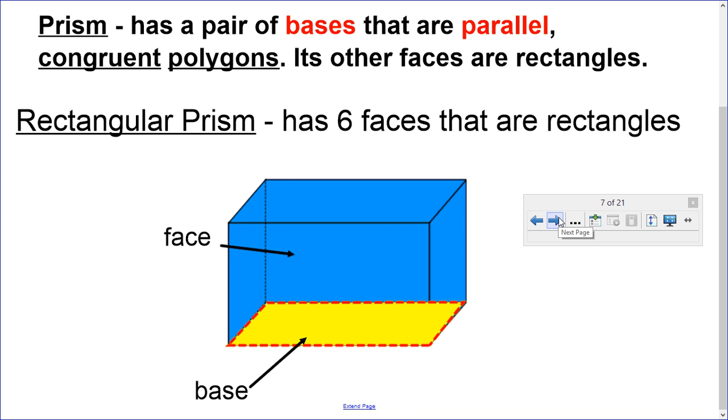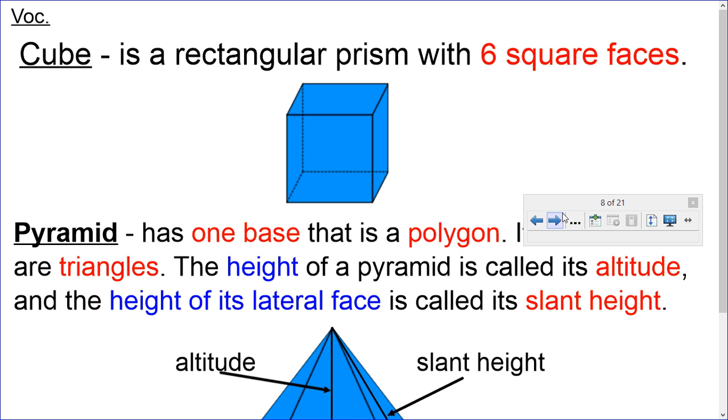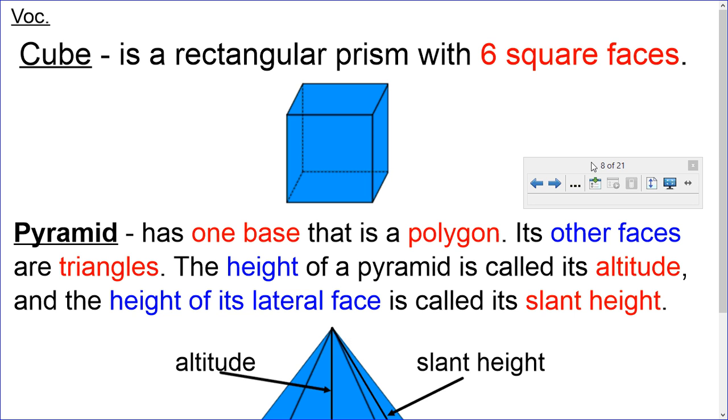So that's a rectangular prism. Here are some other figures that are also three-dimensional, such as a cube. It's a rectangular prism with six square faces. So there are six faces. You would think of a dice cube when you're thinking about a cube.